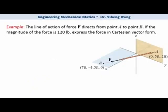Let's look at this example. The force has a magnitude of 120 lb, and its direction is shown in this image as directed from point A to point B, and the coordinates of both point A and B are given. We need to express this force in its Cartesian vector form.